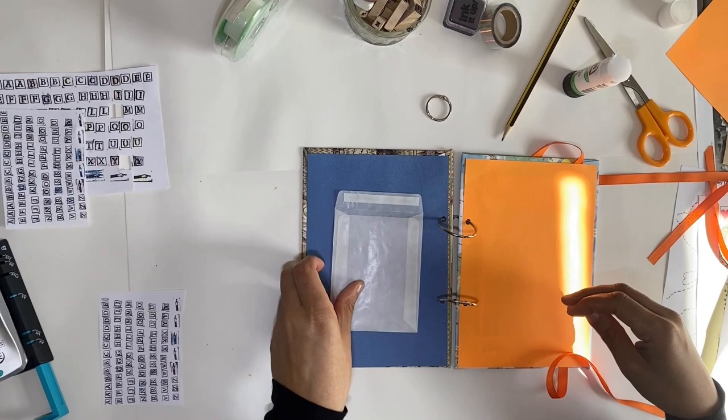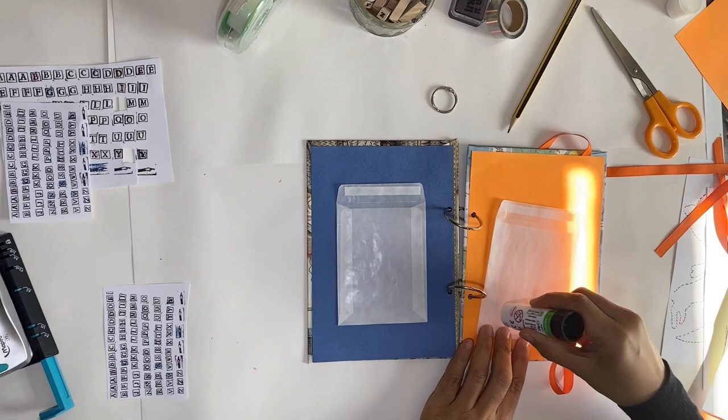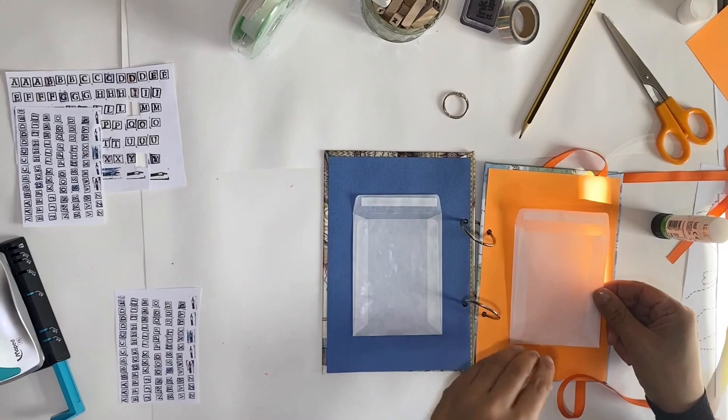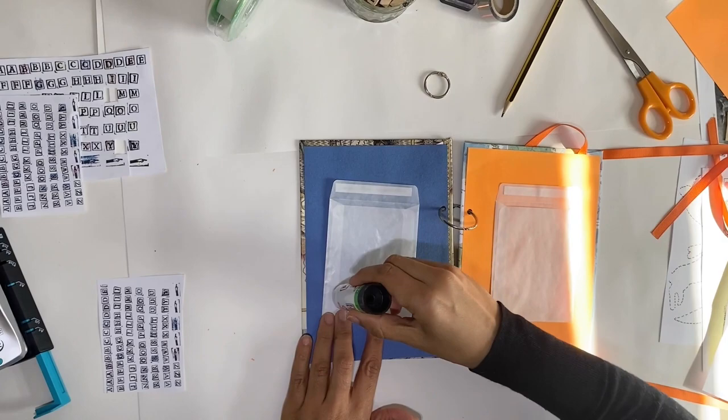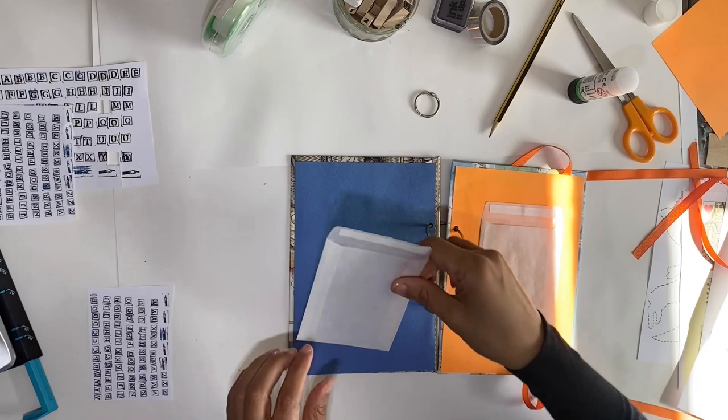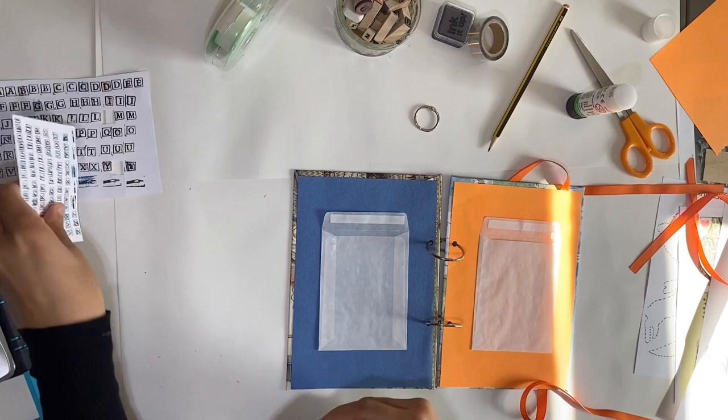I'm gluing two mini envelopes inside the inside covers. They're a great way to pop little bits in that you might collect along the way. If you don't have any mini envelopes, you can reuse an envelope that you received in the post, or you can make your own envelope out of paper. I'm going to store some of the alphabet letters inside my envelope for later.